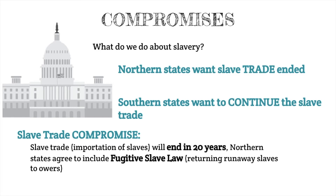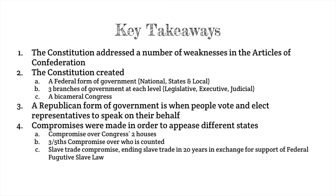Slavery became another topic as northern states wanted to end the slave trade and reduce the importation of slaves from overseas. The South, with slavery as a vital part of their economy, wanted to continue the slave trade. Eventually, the slave trade compromise was reached, where the slave trade would be ended after a period of 20 years. In return for the South agreeing to this, they wanted the North's support for enforcing a fugitive slave law — so that if slaves escaped to a non-slave state, those slaves could be returned to their owners as property. These were significant compromises made in order to make this constitution a reality.